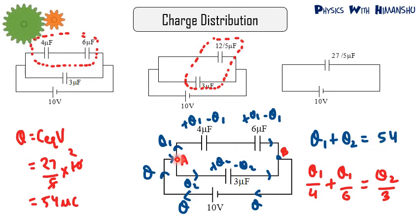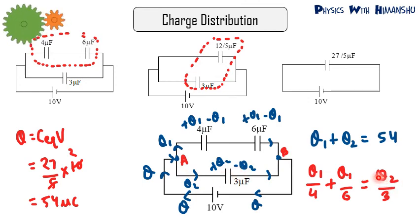To form the second equation, note that going from point A to point B via the upper branch gives a potential drop of Q1/4 + Q1/6, and going via the lower branch gives Q2/3. Since both paths connect the same two points, set them equal: Q1/4 + Q1/6 = Q2/3. Solving these two linear equations gives the values of Q1 and Q2.